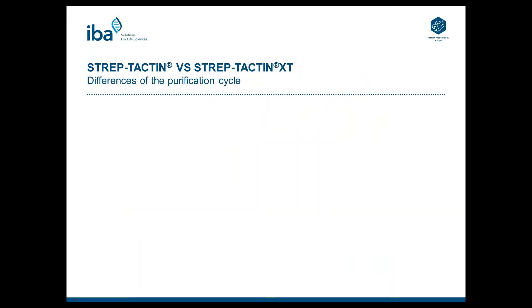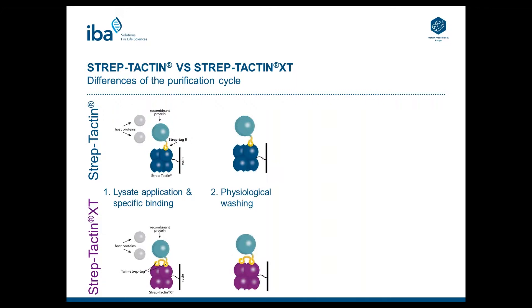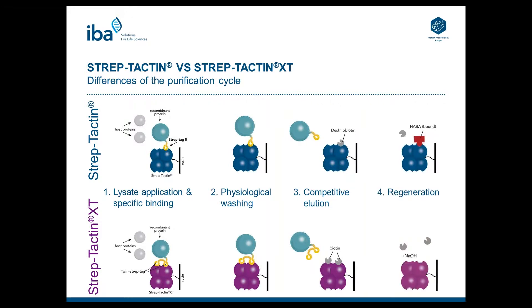If you compare the purification cycle of Streptactin and Streptactin XT, you will see that there are only two changes in the procedure. For both, first the lysate is applied and then the column is washed — the same buffers can be used for those two steps. But for elution, the procedure differs. For elution from Streptactin, you should use Desthiobiotin. If you use biotin, the resin will be blocked irreversibly. For Streptactin XT, you have to use biotin because Desthiobiotin is not strong enough to elute the protein efficiently.